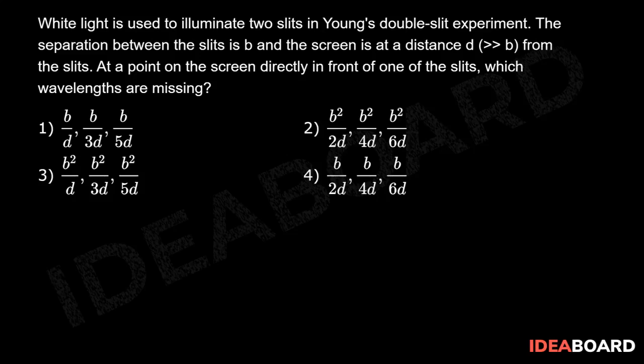Now, the distance of nth dark fringe from central is (2n - 1) × λD / d.